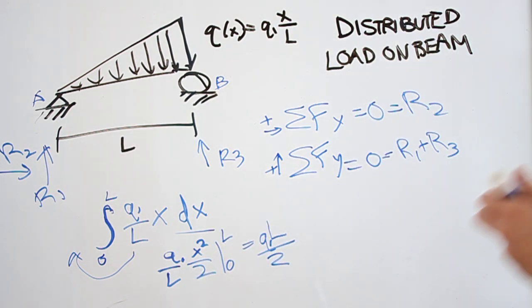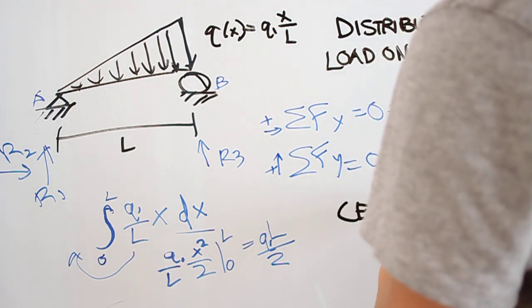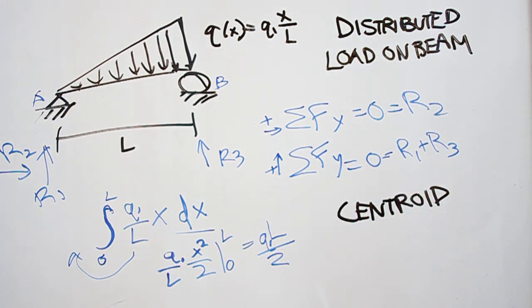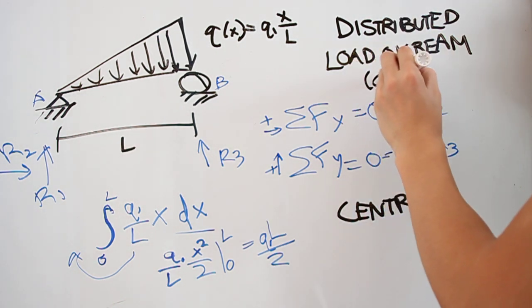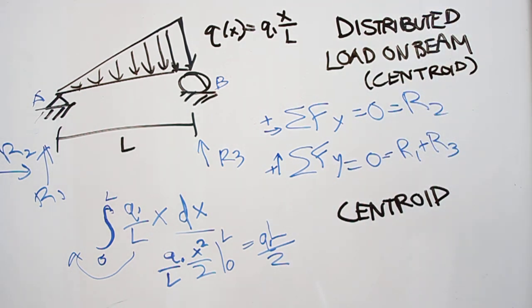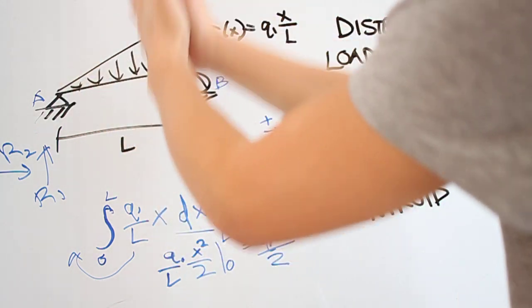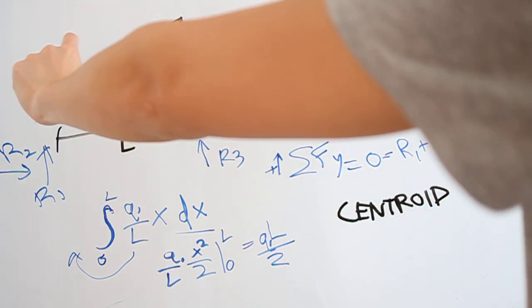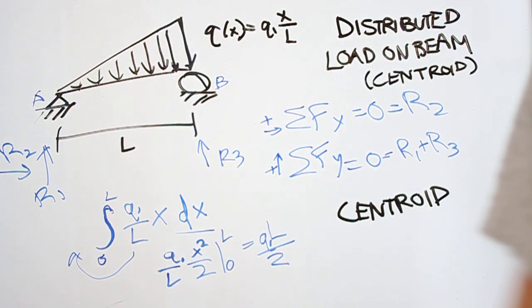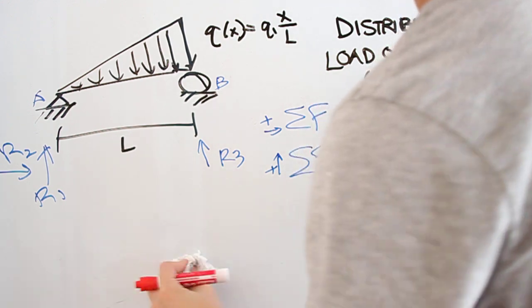Now, where does that force act? To understand that, we need the concept called centroid. The centroid tells us where the concentrated load is located — where all the distributed forces average out to a specific point. When we have a uniform horizontal distributed load it's intuitively right at the center, but here with a triangular load it's not.